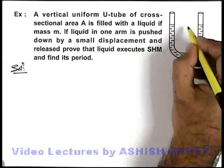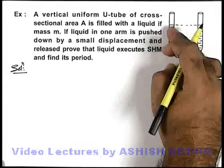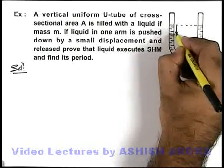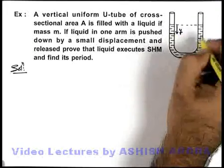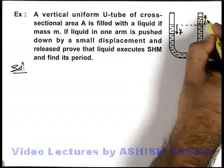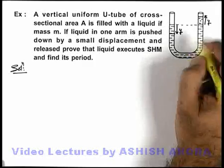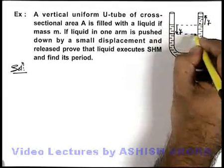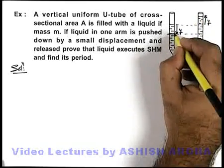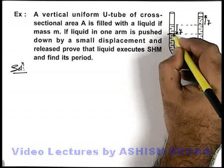In this situation, obviously at equilibrium both the levels in the two arms for the liquid would be the same. So if in the left arm the liquid is pushed down by a displacement y, obviously as the area is uniform, in the other arm the liquid level will be raised up by the same distance y. So the liquid in the right arm is 2y height above the liquid in the left arm.